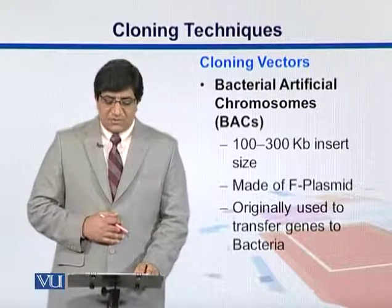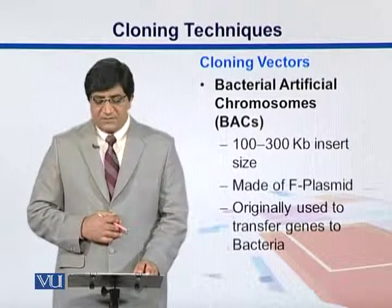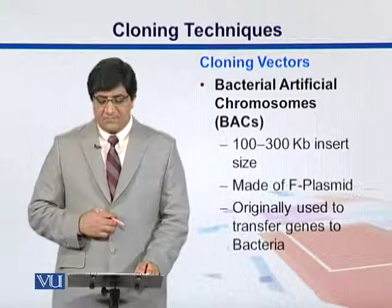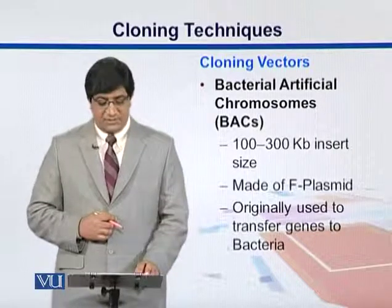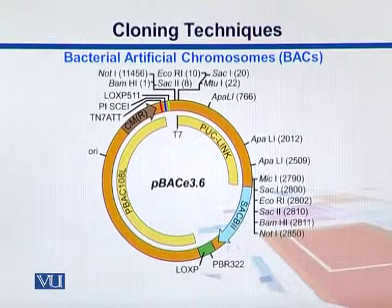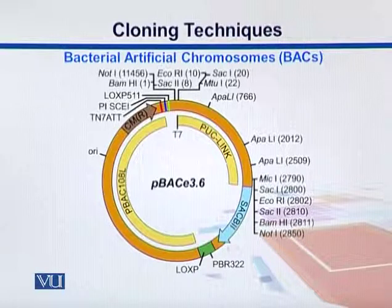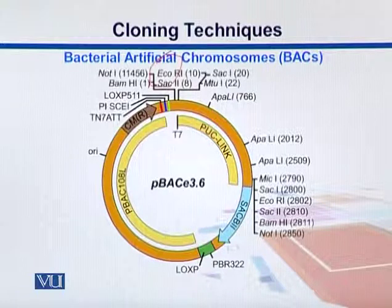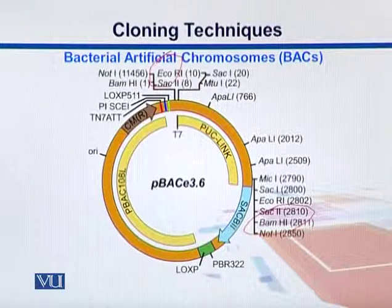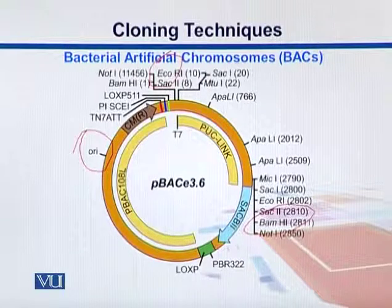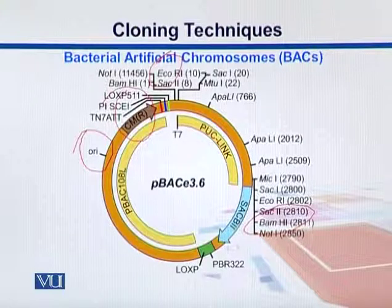Bacterial artificial chromosomes, or BACs, can take insert sizes of up to 300 kb and are made up of F plasmids. Originally they were used to transfer bacterial genes. Here is an example of a BAC — we can see different restriction sites, for example the EcoRI site and BamHI site. We also see the origin of replication, which is where replication starts in bacteria — an important region. We can also see antibiotic selection genes, which help in screening.